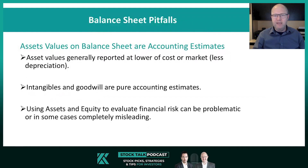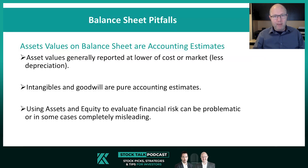That's not an exact science — it relies on a lot of estimates. These values are accounting terms, not necessarily economic terms. Certain assets like intangible goodwill may have no value in the market. Goodwill particularly is purely an estimate. So using assets and shareholders' equity to evaluate financial risk can be problematic and in some cases very unreliable. In the best of circumstances you really need to use caution, and in some cases these values reported on the balance sheet can be completely misleading and you can't rely on them at all.